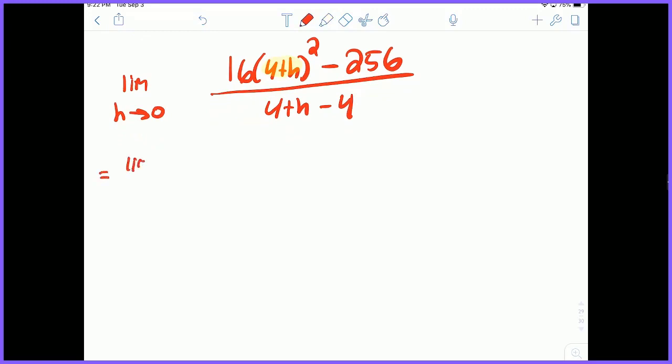Let's go ahead and see if we can expand this. So this is going to equal the limit as h approaches 0 of, let's just multiply the 16 as well while we're doing this. So 256 plus 128h plus 16h² minus 256 all divided by... Notice on the bottom, 4 minus 4 makes 0, leaving me just with h.